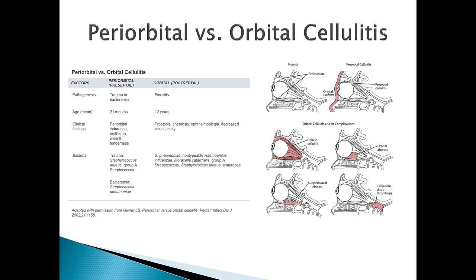If you get your handout out, make sure you note that the abnormal physical exam finding for orbital cellulitis is extraocular eye movements, and that this is an urgent referral.